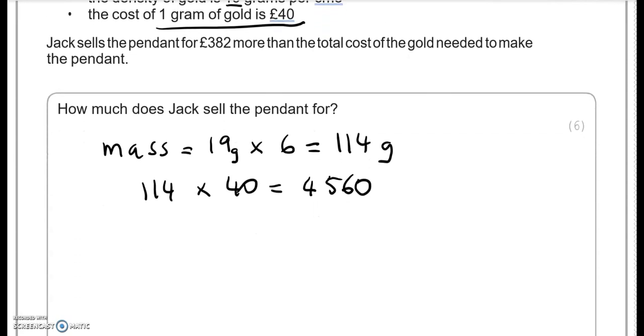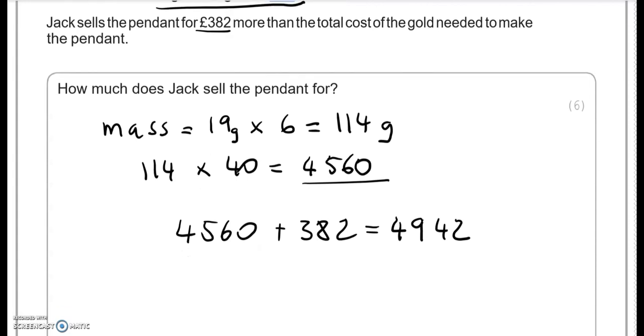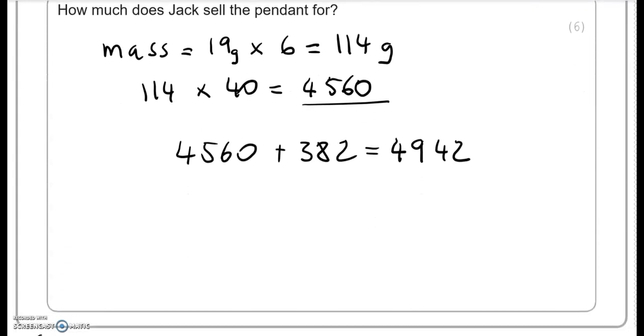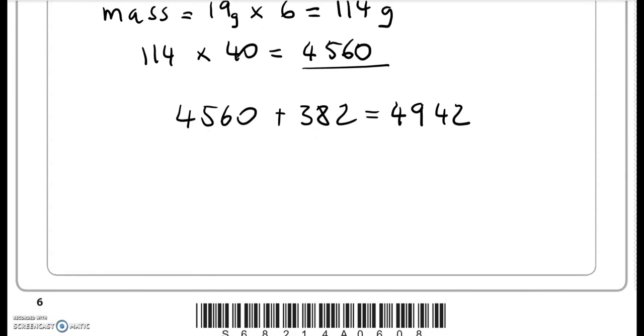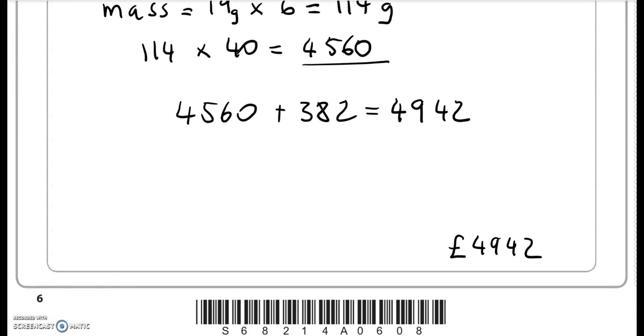So Jack sells the pendant for 382 pounds more than the total cost. So this was the cost. We're going to add 382 to that. And that is 4,942 pounds. And that's how much he sold it for. And this is the end of this part. Thank you.